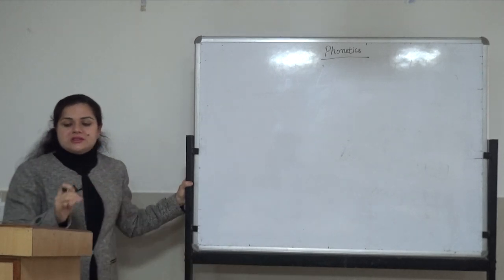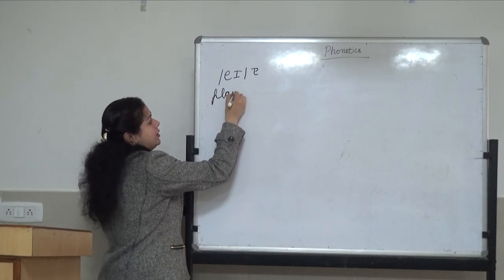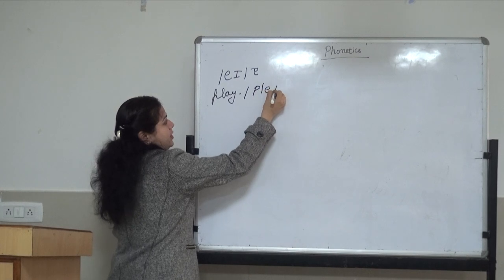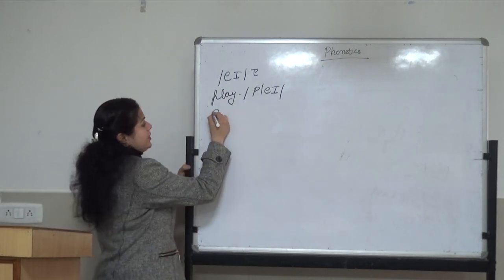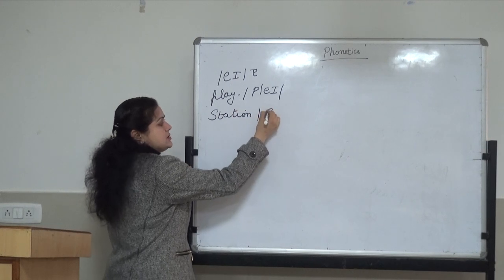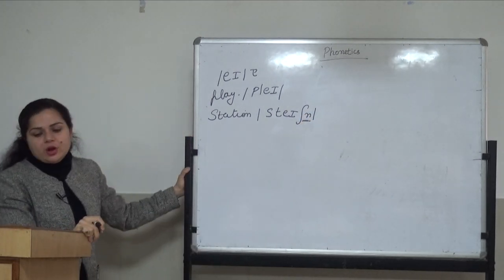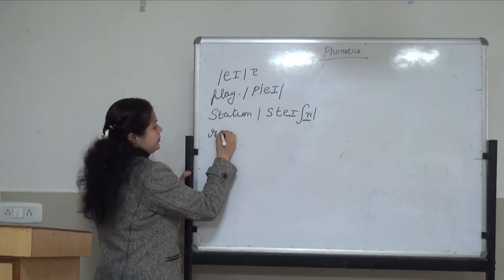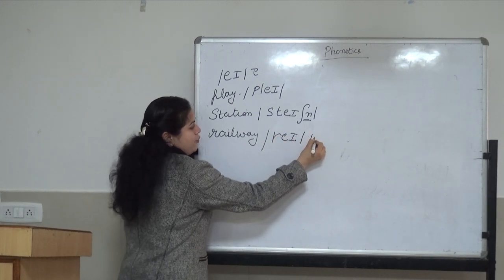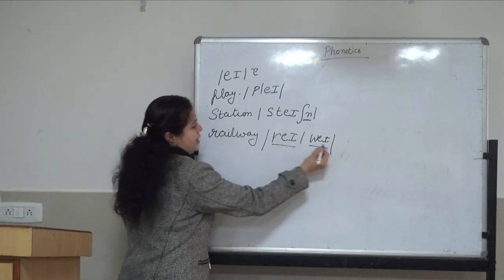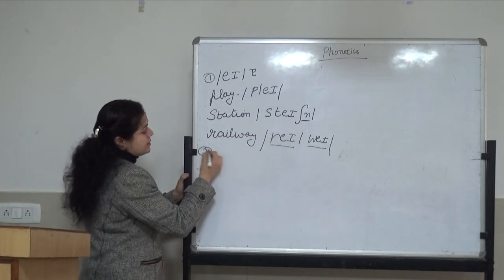The first symbol of diphthong is /eɪ/. Diphthong is a mixture of two sounds. For example: 'play' — /pleɪ/. 'Station': /steɪʃn/ — ready-made symbol of station. 'Railway': /reɪlweɪ/. This is the symbol of /eɪ/.